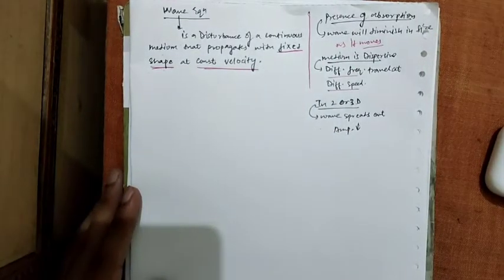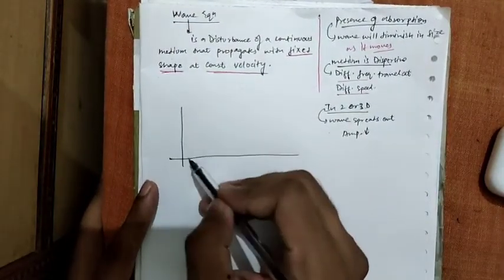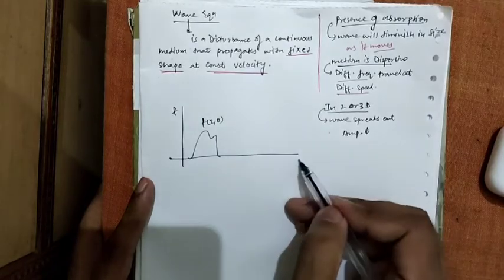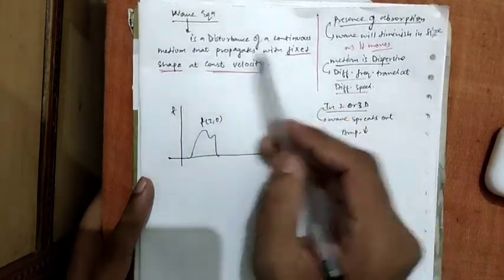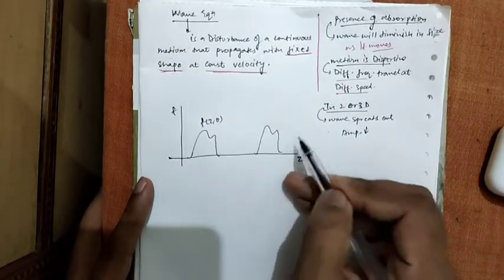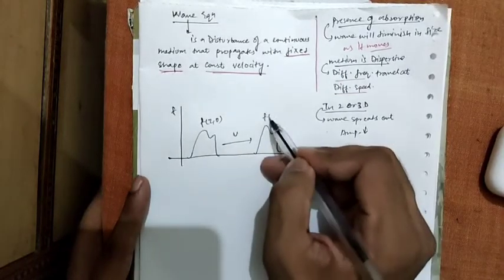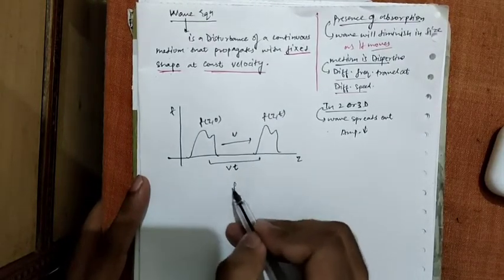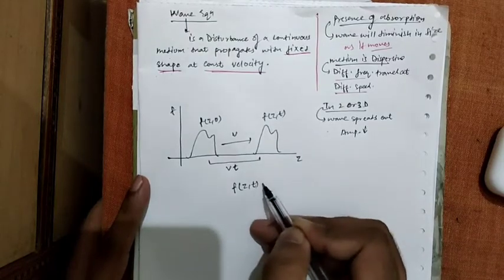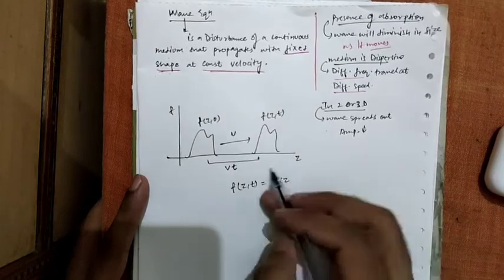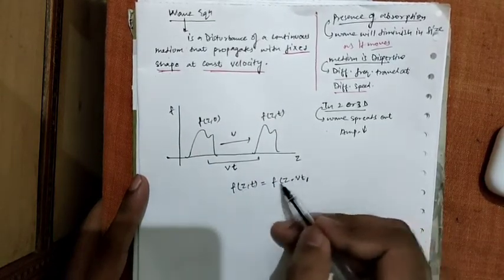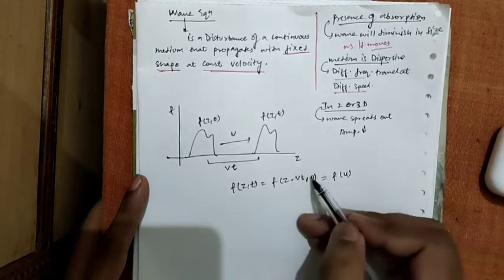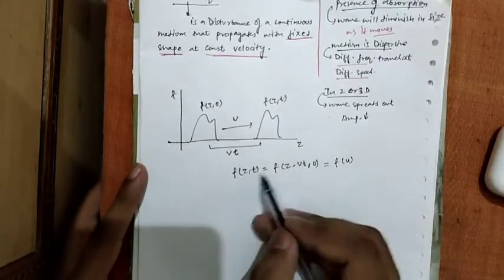Let's say a wave is described by the function f(z, 0). Since the shape remains fixed and it moves with constant velocity v, the function becomes f(z, t) = f(z − vt). This can also be written as f(z − vt, 0), and collectively as f(u), since t=0 has no special meaning here.